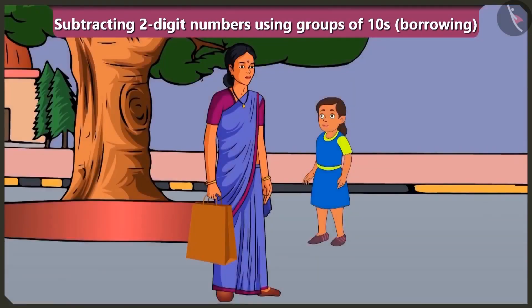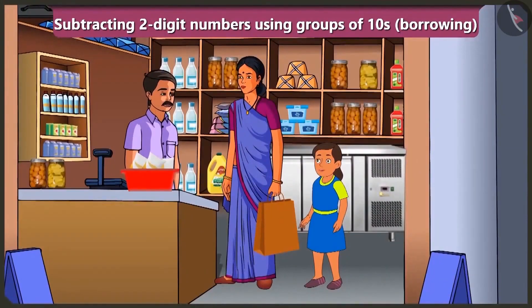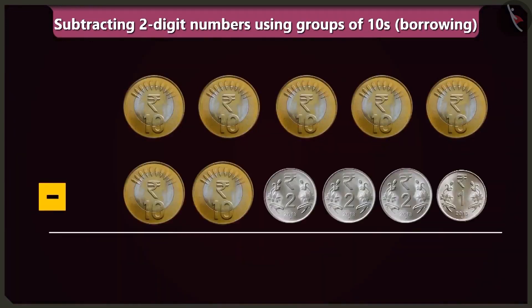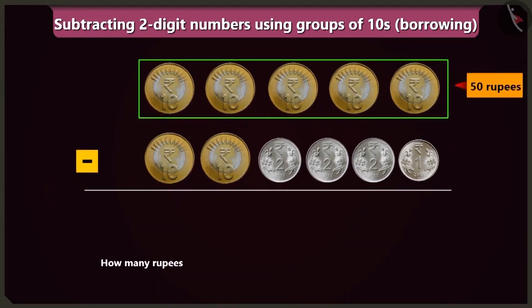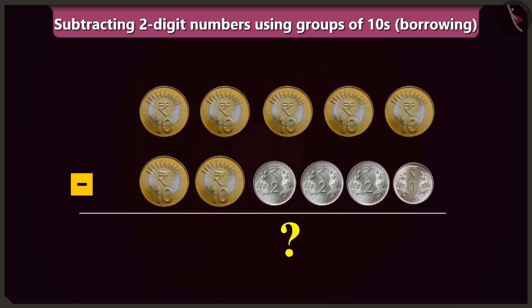Come on, let us now go to buy milk. Brother, what is the price of one packet of milk? One packet is twenty-seven rupees. Take this, fifty rupees. Mummy, uncle said the milk is twenty-seven rupees. Then why are you giving him fifty rupees? Bubbly, uncle will subtract twenty-seven rupees from fifty rupees and give the rest of the money back. How many rupees would it be if we subtract twenty-seven rupees from fifty rupees?